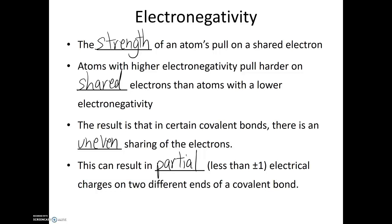Or, one side is stronger than the other. And if one side is stronger, they get more of the rope — or in this case, the electrons spend a little more time around the stronger atom. Since electrons have a negative electrical charge, if they're spending more time around one atom than the other, that atom will have a partial negative charge, whereas the atom with less time with the electrons will have a partial positive charge.